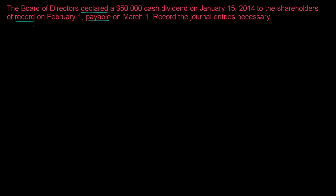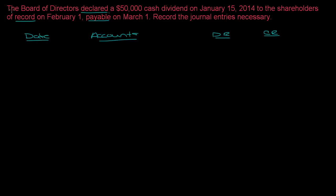So there are three dates that are important — let's go through and look at the journal entries we need to record. The board of directors declared a $50,000 cash dividend on January 15th. So this is the declaration date — on 1-15 the dividend is actually declared.